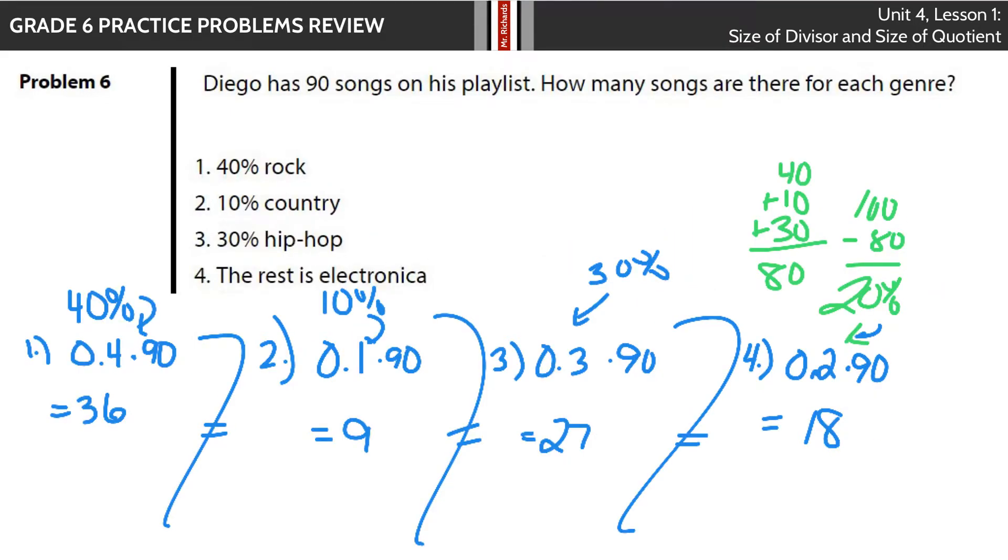Diego has 90 songs on his playlist. How many songs are there for each genre? 40% rock. Let's take our 40%, move the decimal over twice to the left, it's 0.4, times 90 gets you 36. And that's what we're going to do throughout. 10% country, 0.1 times 90 gets you 9. 30%, 0.3 times 90 is 27.